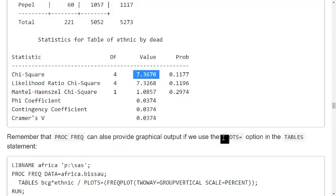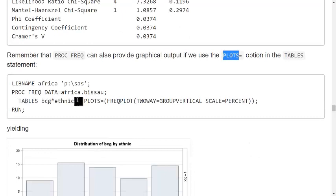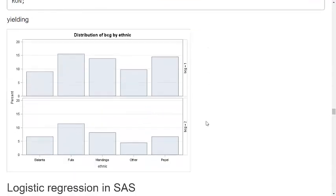And actually, Brock-Freq can also provide graphical output using the plots option. So I will just illustrate this here. I use the table statement and here I specify plots and then I specify a frequency plot, group vertical and so on. And this gives me this illustration of the table. What's the percentage in each of the five groups for the vaccinated children? What's the percentage in each of the five groups for the unvaccinated children?